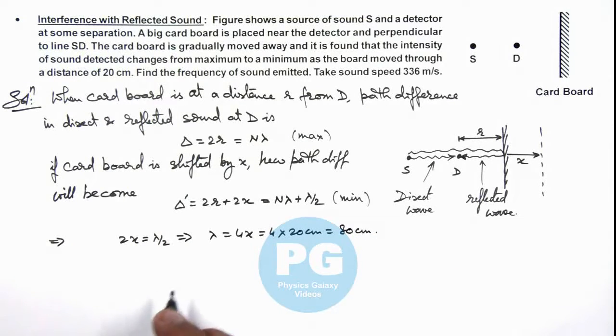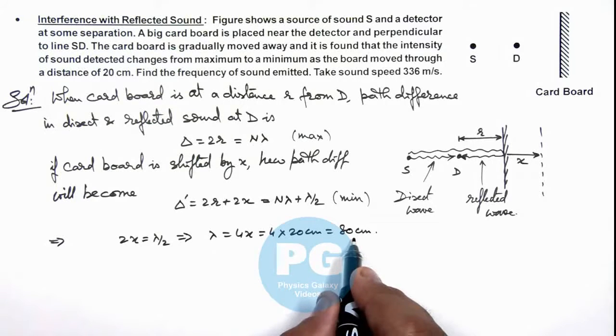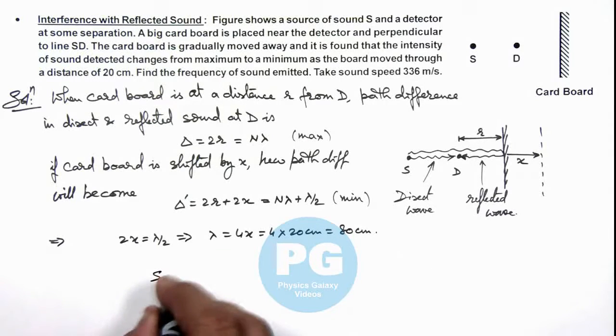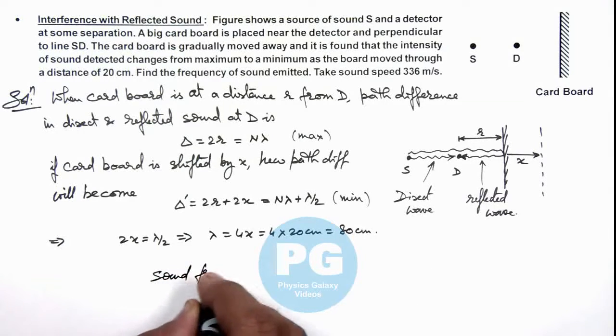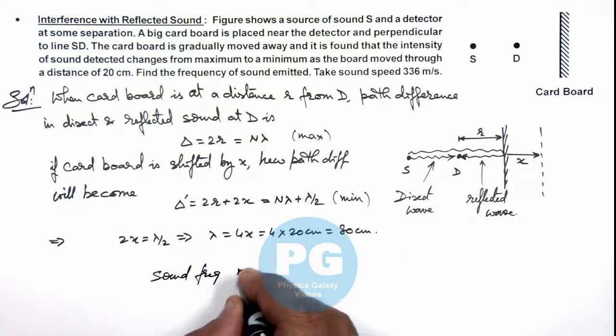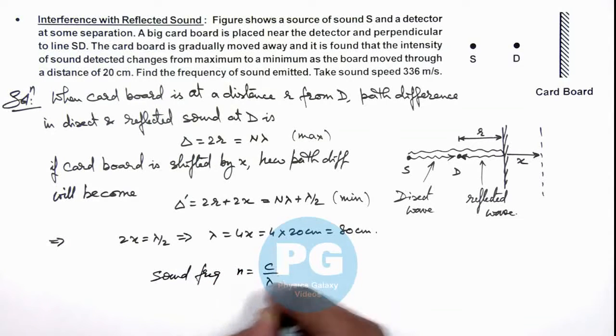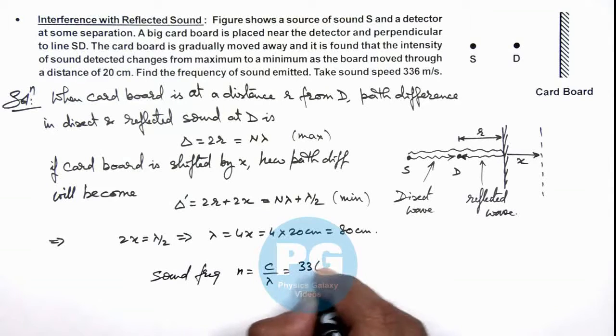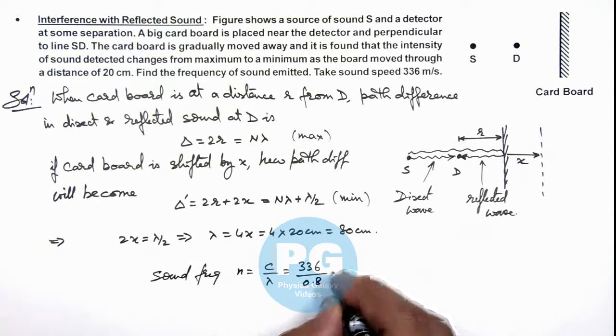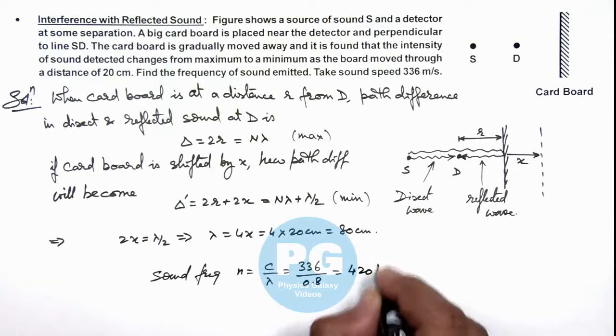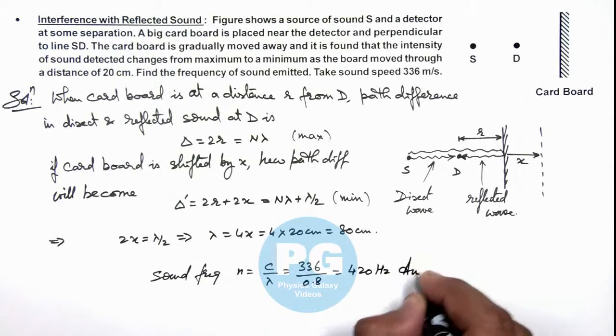So as we have got the value of wavelength of sound wave, we can directly write the sound frequency in this case is c by lambda, which is 336 divided by 0.8, that is equal to 420 hertz. That is the result of this problem.